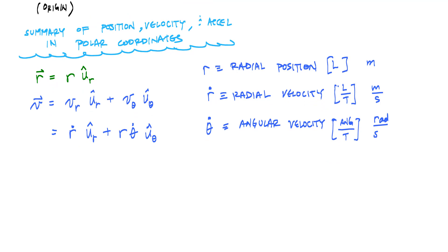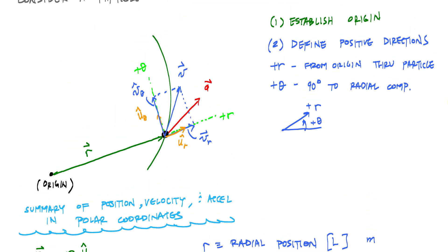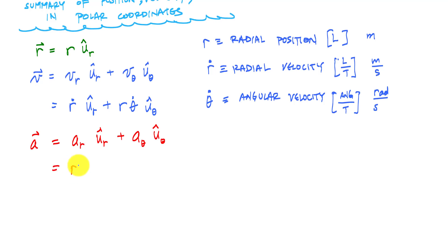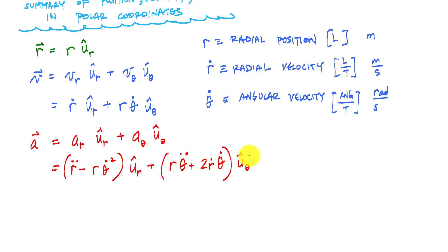Taking a time derivative of the velocity gives us the acceleration vector. The acceleration vector also has components in the radial and transverse directions. The full expression is: the radial component is r-double-dot minus r times theta-dot squared, in the u-r-hat direction; plus r times theta-double-dot plus 2 times r-dot times theta-dot, in the u-theta-hat direction.